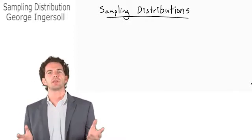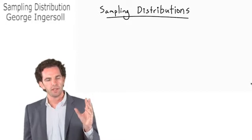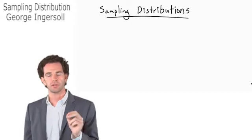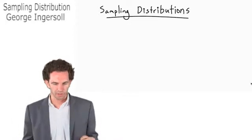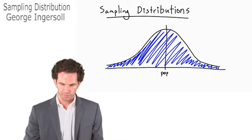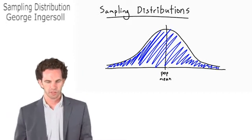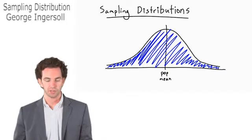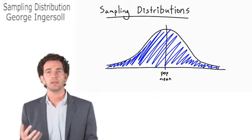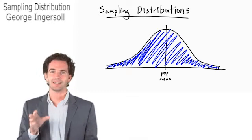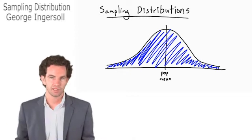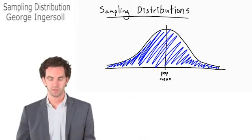In our last video we talked about the central limit theorem and how it explains that the mean of a sample taken from a population is going to have a probability distribution that is normal, centered around the population mean. The expected value of that sample mean is actually our population mean. It doesn't mean we expect to get the exact population mean in our sample — it just means that's the average value we can expect to get from the sample mean, based on a normal probability distribution centered around the population mean.